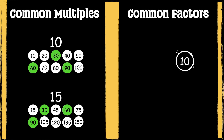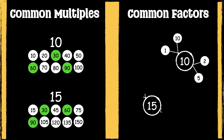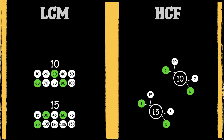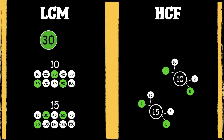Here are the factors of 10 and the factors of 15. The common factors are 1 and 5. So we can see that the lowest common multiple of 10 and 15 is 30, and the highest common factor of 10 and 15 is 5.